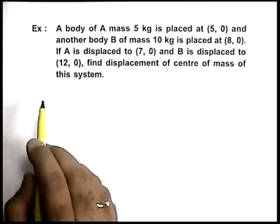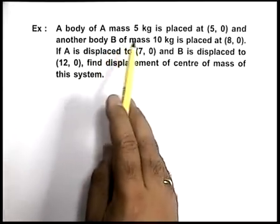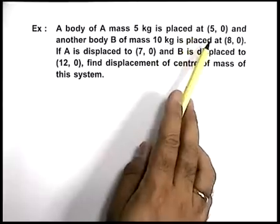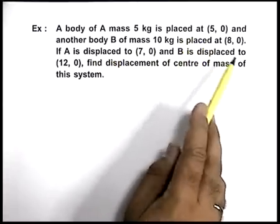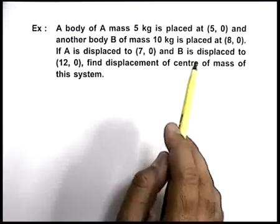In this example, we're given that the body of mass 5 kg is placed at 5 comma zero, and another body B of mass 10 kg is placed at 8 comma zero.